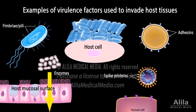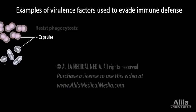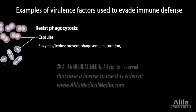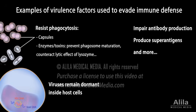Some organisms produce enzymes to cut across host cells to make entry from mucosal surfaces. Viruses use spike proteins on their surface to bind and enter host cells. Some bacteria have a capsule that helps them resist being eaten by phagocytes. Others produce enzymes or toxins that prevent phagosome maturation or counteract the lytic effect of lysozyme. Some viruses can remain dormant inside host cells, effectively hiding from the host immune system.